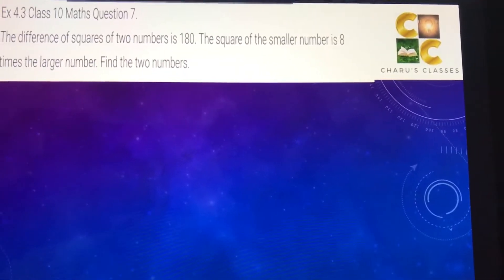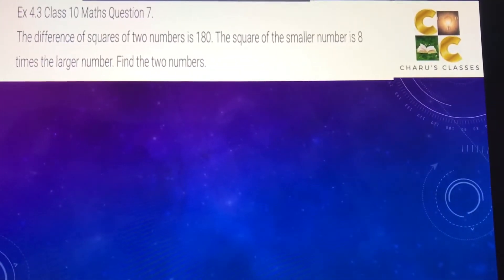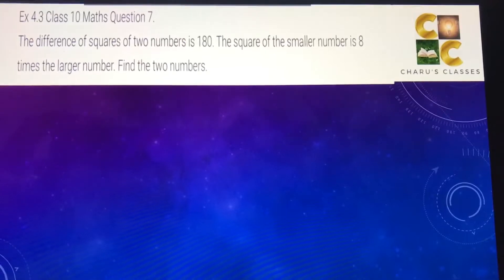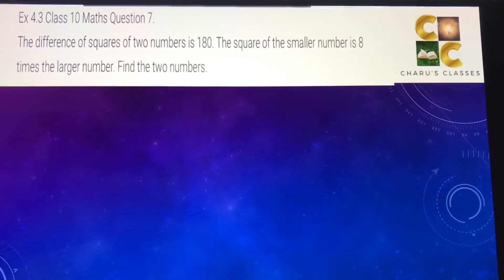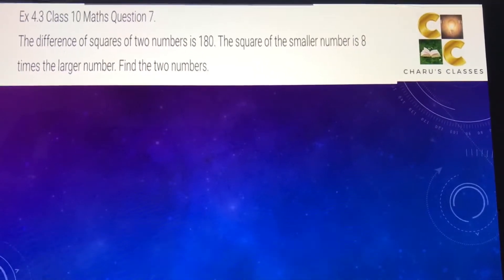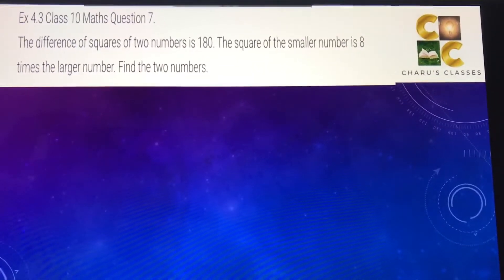Hello students, today we are going to do exercise 4.3, question number 7. The difference of squares of two numbers is 180. The square of the smaller number is 8 times the larger number. Find the two numbers.